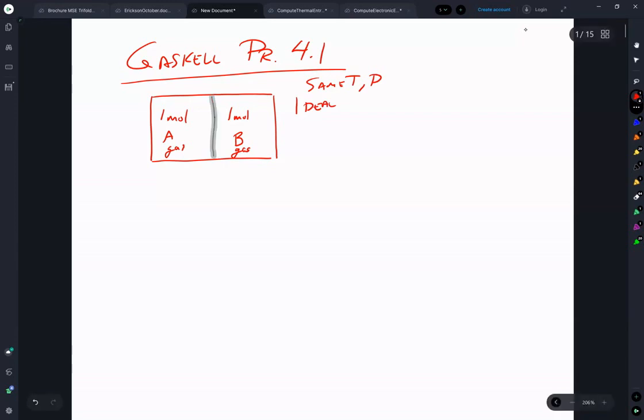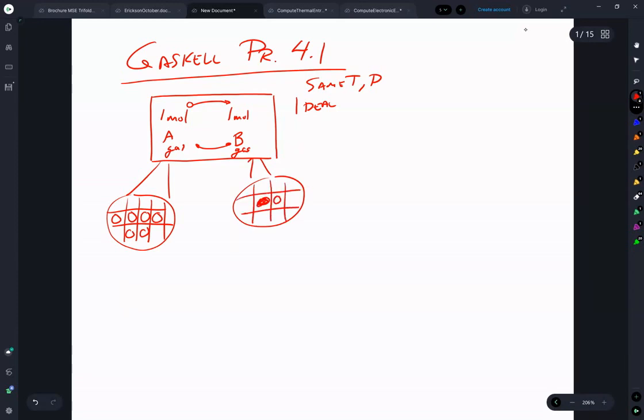The question is, as we remove that partition to allow the A atoms and the B atoms to migrate, what is the change in the entropy? So we've basically created an ideal system in which you can think of this as having a bunch of equally distributed A atoms. And I draw them in boxes, because I'm a solid-state person. And B atoms in boxes. And when they become mixed, you have some degree of entropy change.